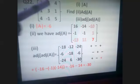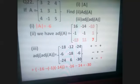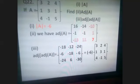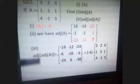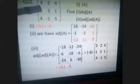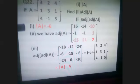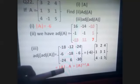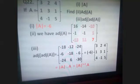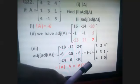Now I ask you to find any connection between A, adjoint of A, and adjoint of adjoint of A. Can you connect the given matrix A and adjoint of adjoint of A? It is minus six times A — and what is minus six? It is the determinant of A. So what you observe is that adjoint of adjoint of A equals determinant of A times A — but remember, this holds specifically for a 3×3 matrix. For an n×n matrix, it is actually determinant of A raised to n minus 2. The general result is: adj(adj(A)) = det(A)^(n−2) · A.